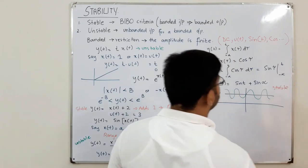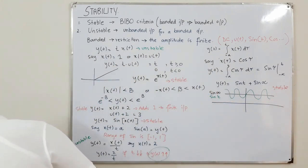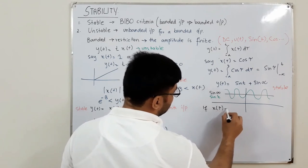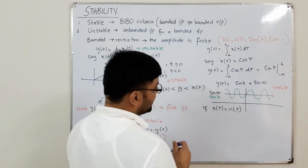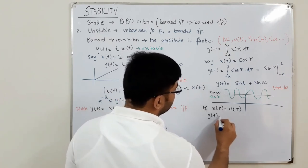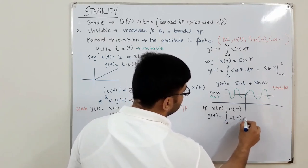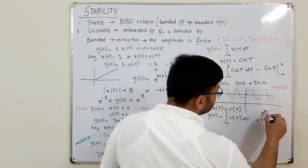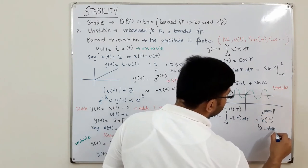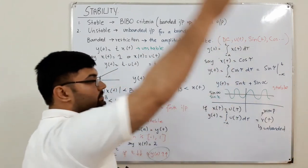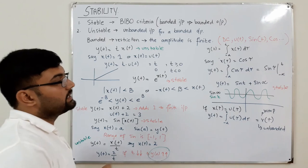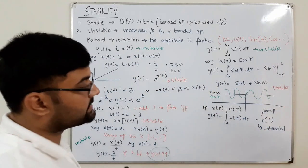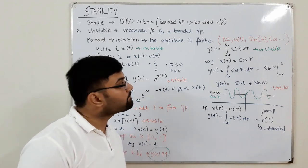But what if the input is a unit step signal? If x(τ) = u(τ), then y(t) = ∫(from -∞ to t) u(τ) dτ. The integration of u(τ) is the ramp signal r(t), which is an unbounded signal — it increases with time. So for a bounded input we have an unbounded output, meaning this integration system is an unstable system. If even a single input makes the system unstable, the system is generally classified as unstable.